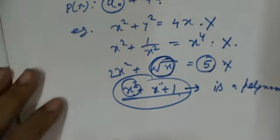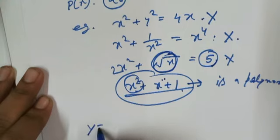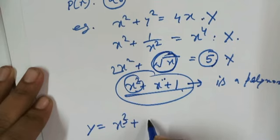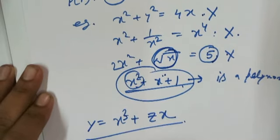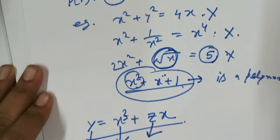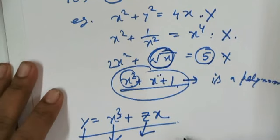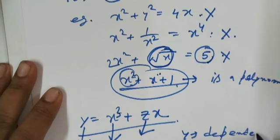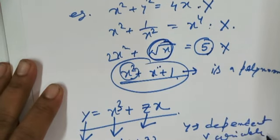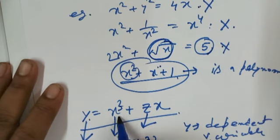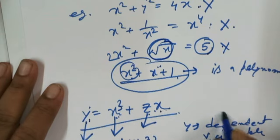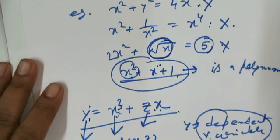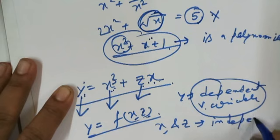Now we discuss the concept of variable. If y = x² + x³ + zx, then here y is a variable, x is a variable, and z is a variable — three variables. y is a function of x and z, so y is called the dependent variable, because the value of y depends on the values of x and z. But x and z do not depend on the value of y, so x and z are called independent variables.